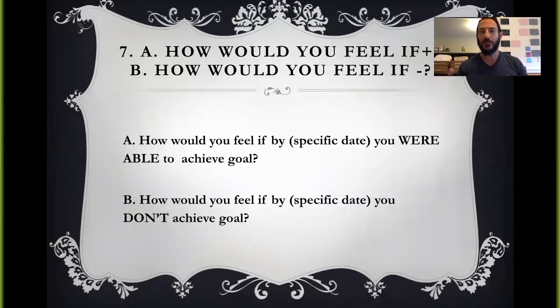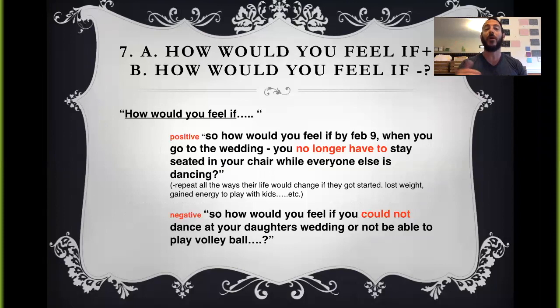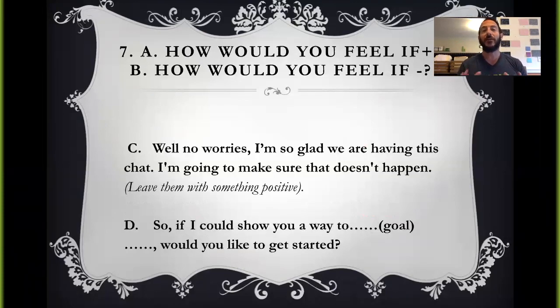Linda, how would you feel if positive? How would you feel if negative? So there's four parts. There's A, B, C, and D. Linda, how would you feel if by June 15th, you're able to fit into those pants, fit into that cocktail dress for your cousin's wedding? Stay here. Let her answer. This is where it becomes emotional, even more emotional. When she's done, Linda, how would you feel if by June 15th, you didn't achieve that goal and you weren't able to get into those jeans or feel the way and look the way you want to look? How'd that feel to you? Again, wait, pause, let her answer. How would you feel positive? How would you feel negative? C, Linda, no worries. I'm super glad we're having this talk right now, and I'm going to make sure that doesn't happen. And then D, so if I could show you a way to fit into those jeans that by June 15th, you feel the way you want to feel, you look the way you want to look, would you like to get started? And then pause. Don't say anything after that. Let them answer. It'll dictate which path we go down. Super important.